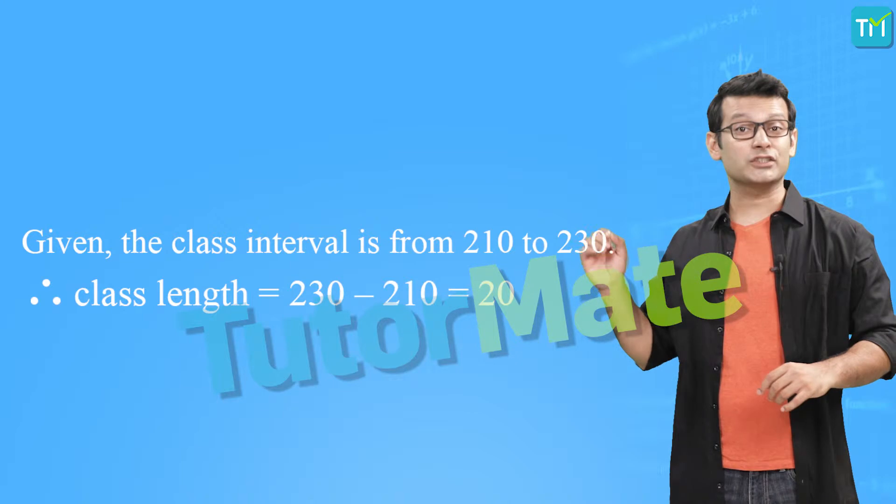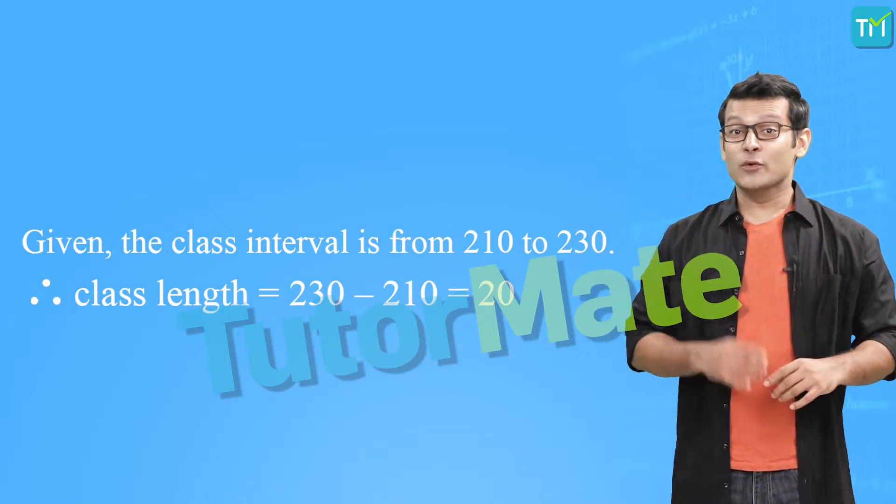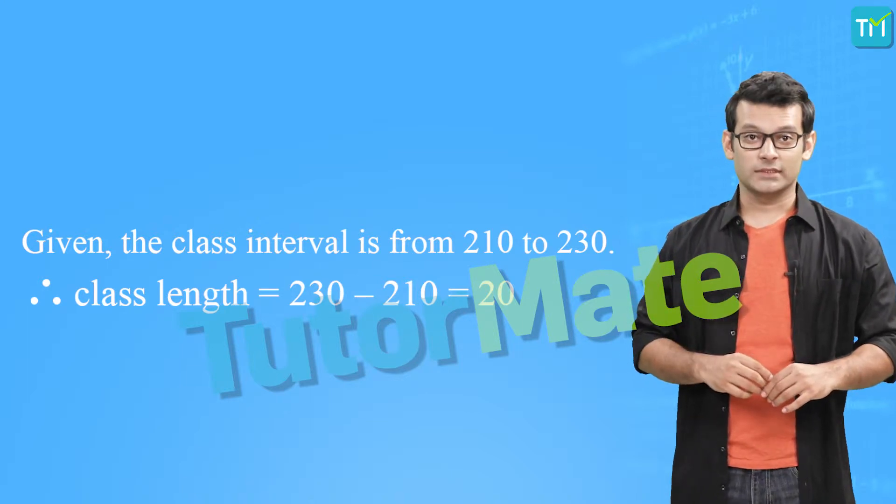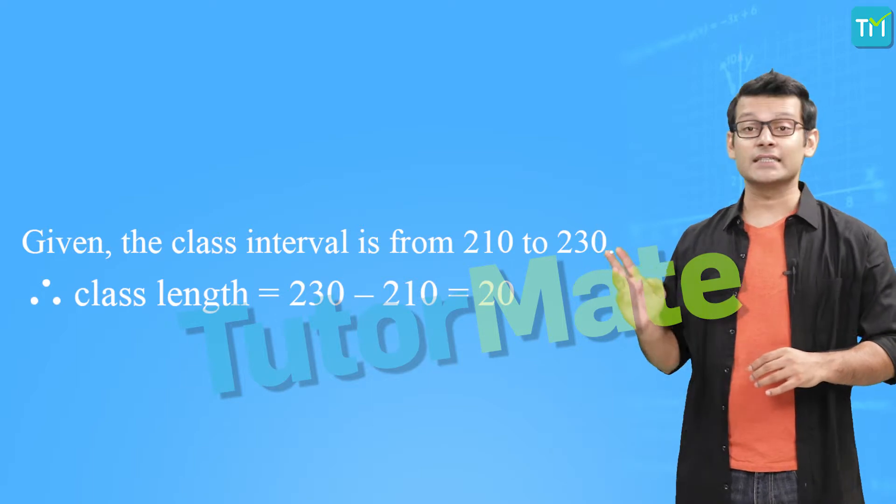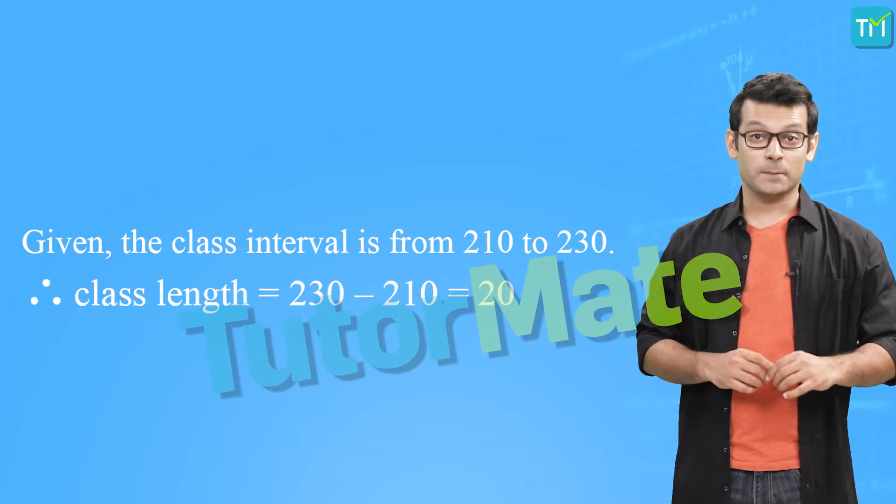Now to find the range, we have to subtract the lowest entry from the highest one. The least entry in this data is 210, while the largest entry is 350. Therefore, the range is 350 minus 210, which is equal to 140.